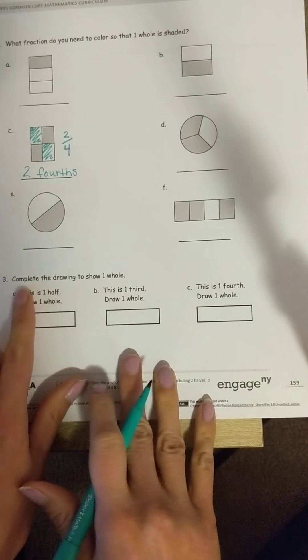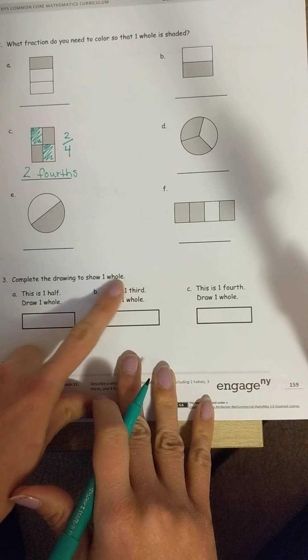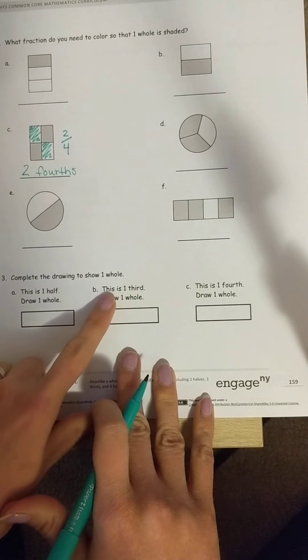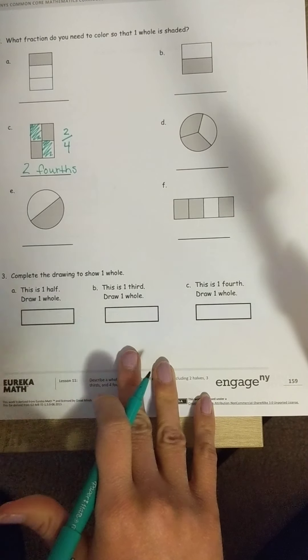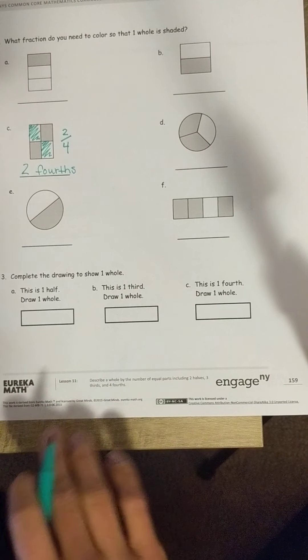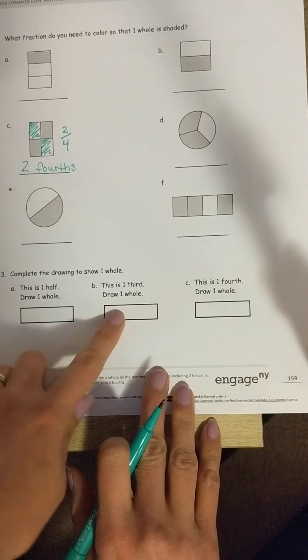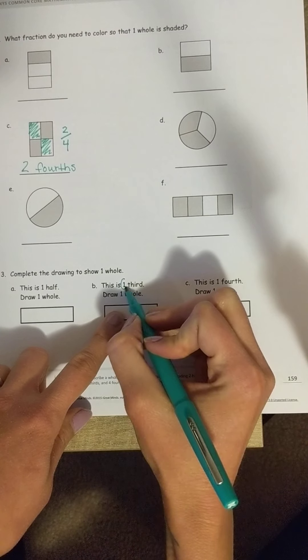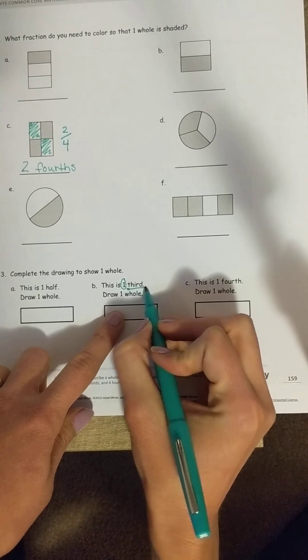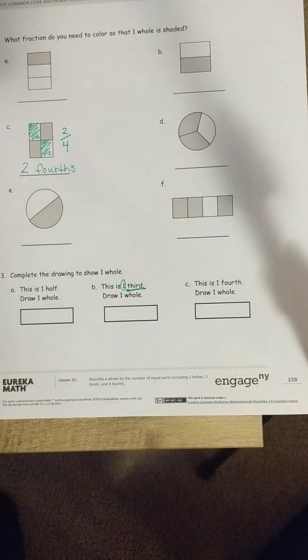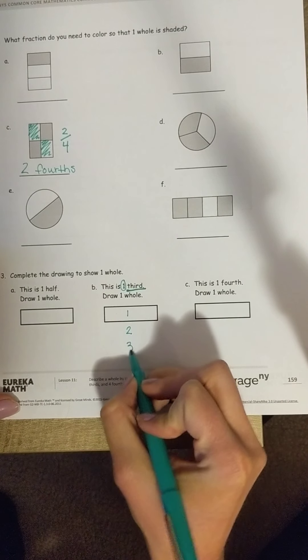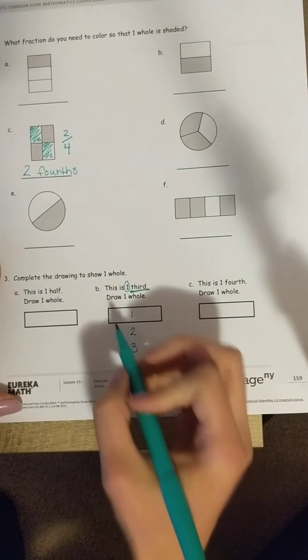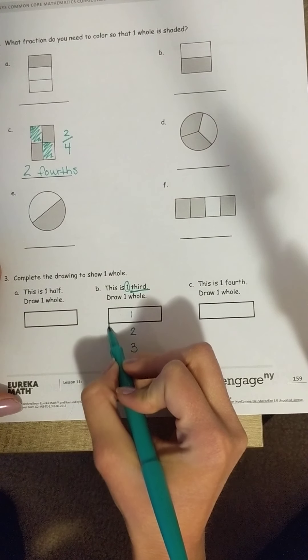Now I'm coming down to the bottom. Complete the drawing to show one whole. This is one third. Draw one whole. Okay, well, if that's one piece, like you told me, one piece out of three thirds, then there has to be one, two, three pieces in the whole shape, and they all need to look the same as that first piece.